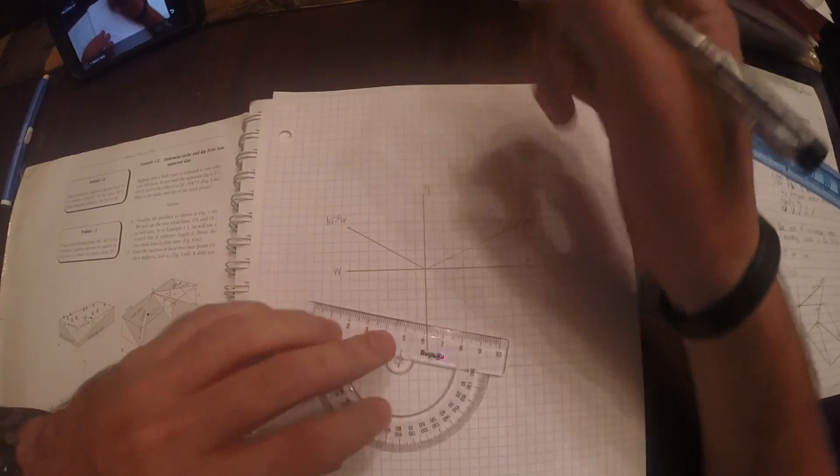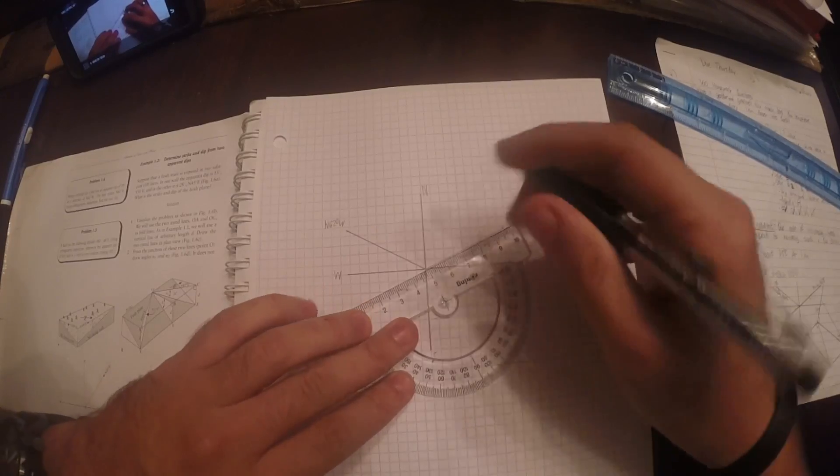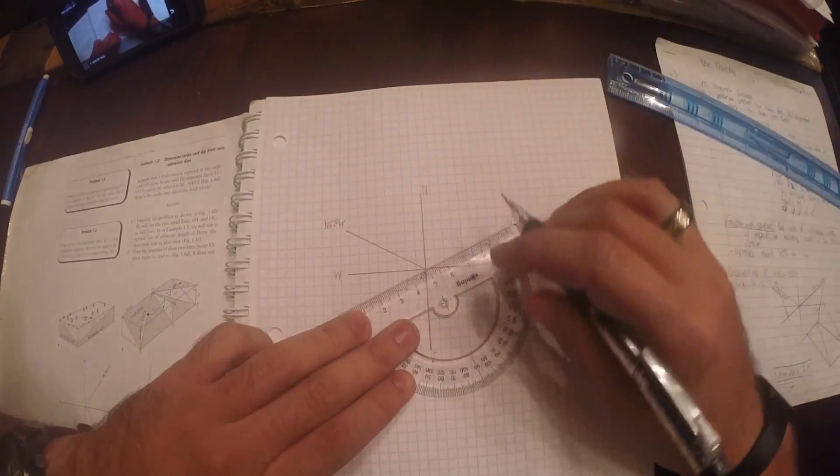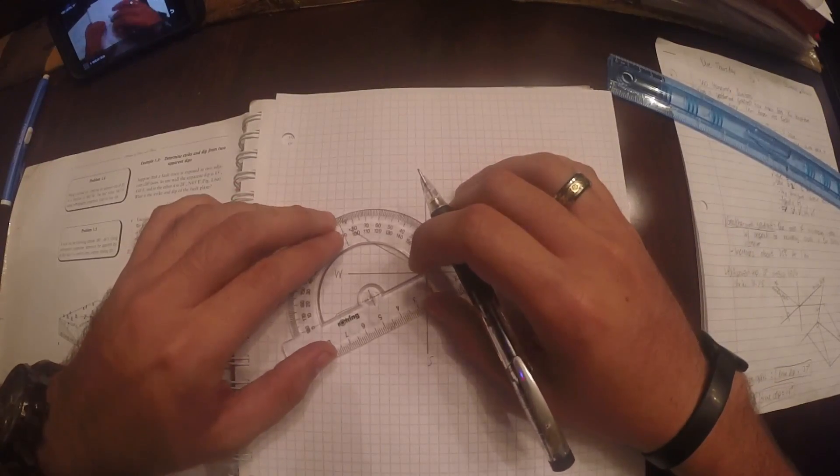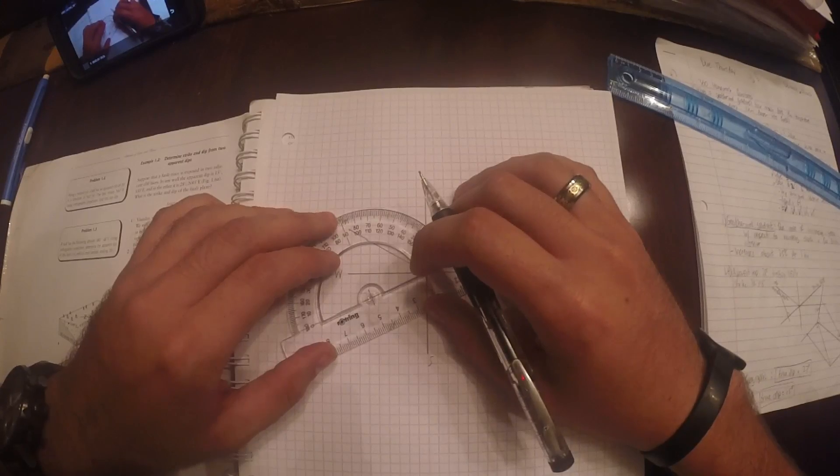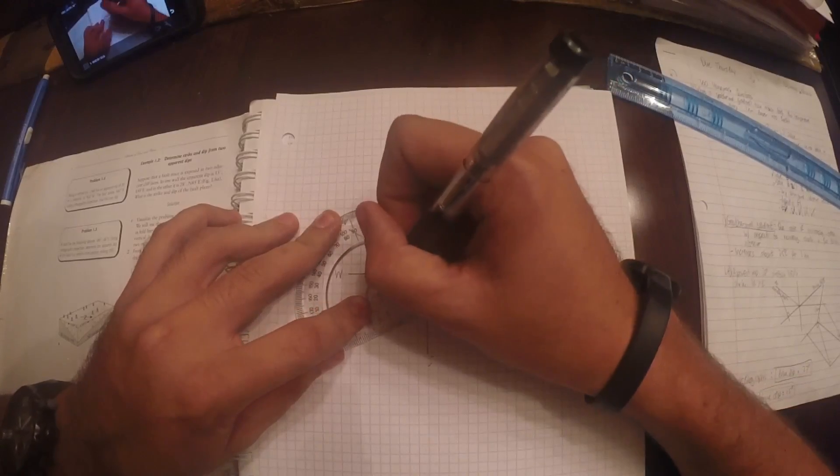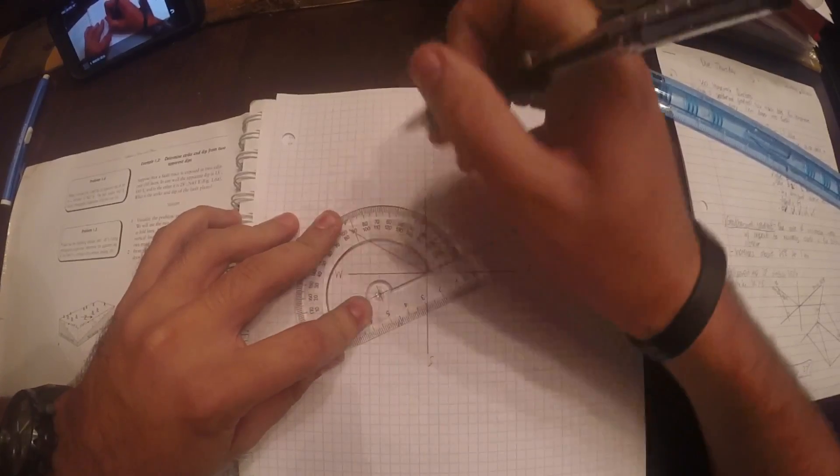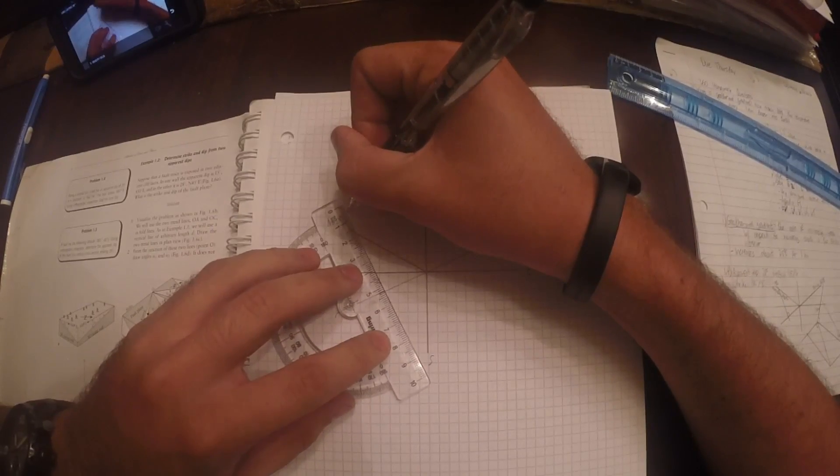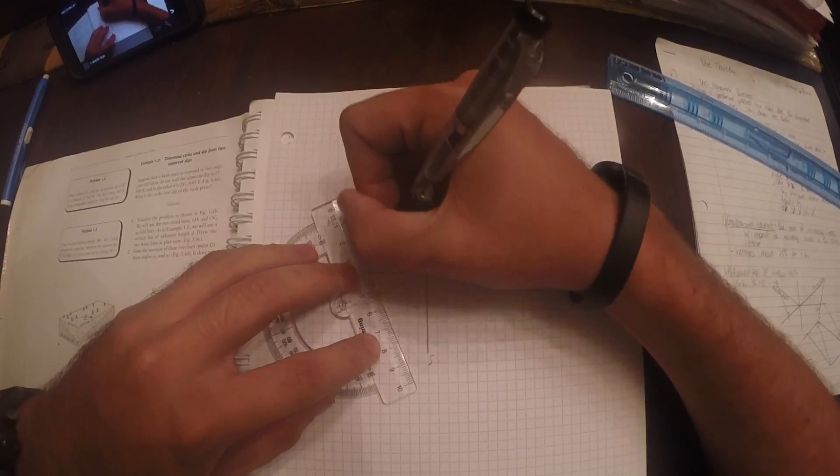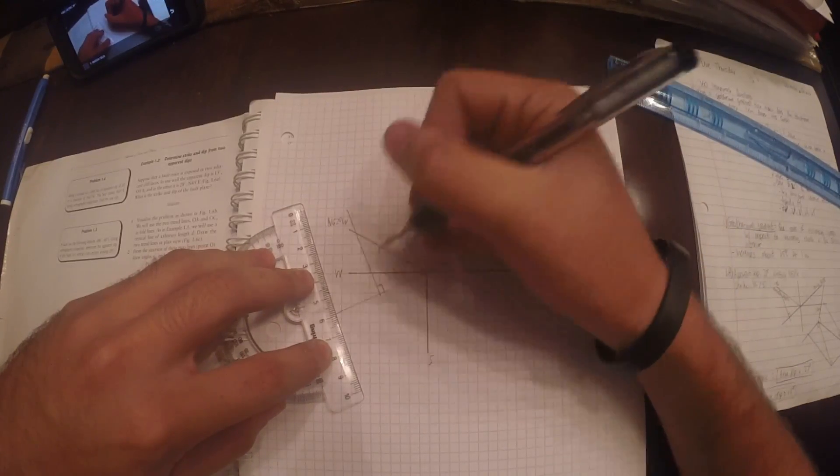Okay, now, what you want to do is you want to extend this line, the line of your strike, a little longer. And then, from that, you want to do a 90 degree line. So, you want a line perpendicular to your strike. So, from this point, up to here. And, like that. So, you've got this right triangle.